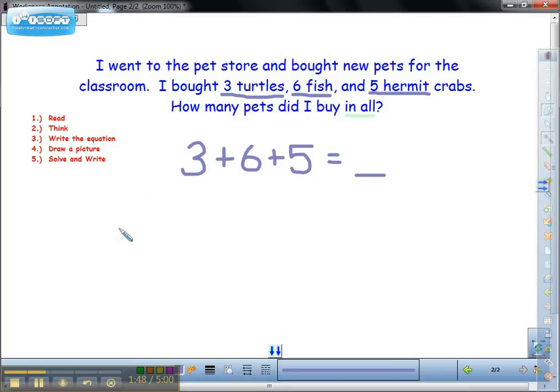So here are my three turtles. Six fish. Six fish. And I like to keep the groups a little separate. And five hermit crabs.